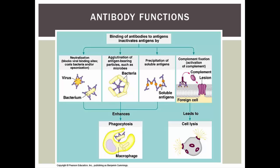Now, what do antibodies actually do? They don't directly do any killing, but they enhance the effects of phagocytes and help lead to cell lysis from complement. One thing they can do is neutralization — neutralizing binding sites of bacterial toxins or viruses that would normally enter or injure cells. The pathogen loses its toxic effects because all those sites that would normally bother your cells are blocked by the antibody. Pathogens also can't bind to receptors on tissues since those binding sites are blocked.